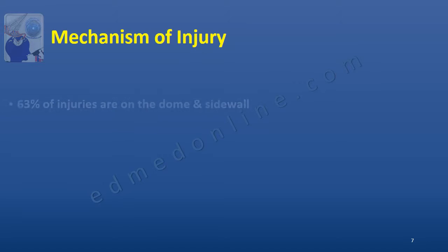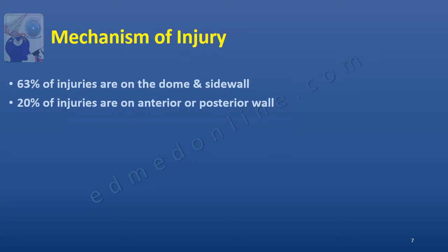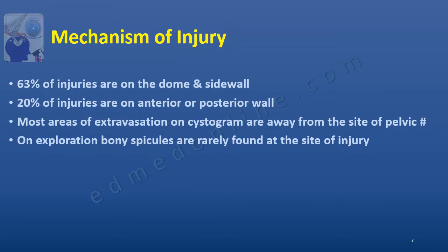The mechanism of injury of bladder trauma is very interesting. It has been found that sixty-three percent of the times the injuries are on the dome and side wall. Twenty percent of them are on the anterior or posterior wall, which means that most of the time the injury is away from the site of pelvic fracture, and on exploration bony spicules are rarely found at the site of injury.